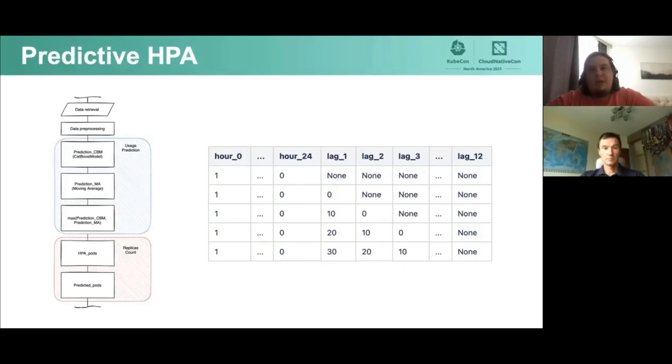For training and prediction, the time series data is implemented with some features. At the moment, lags for the last 20 minutes and an hour in a day are used as features, but this list is non-exhaustive and can be supplemented. On the slide is an example of data transformation and feature generation.